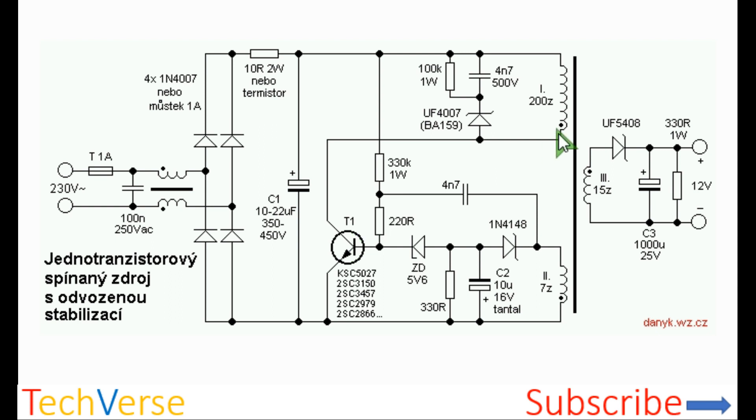Current will continue to increase in the primary winding until it saturates. When this happens, the magnetic field will begin to collapse and negative voltage will be induced in the auxiliary winding. This will cause the transistor to shut down very fast.